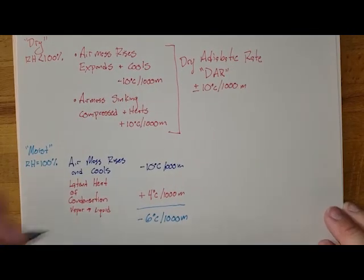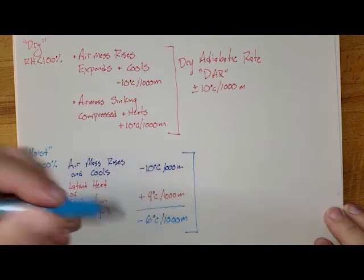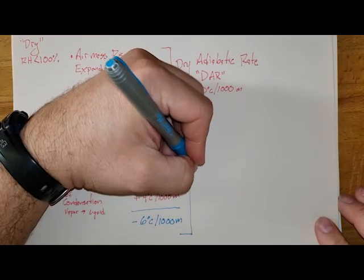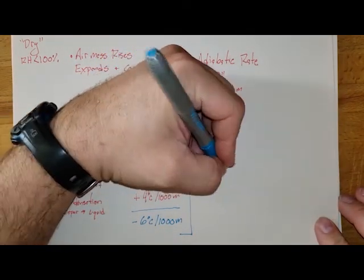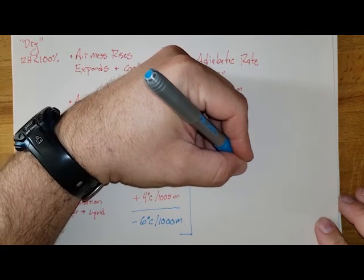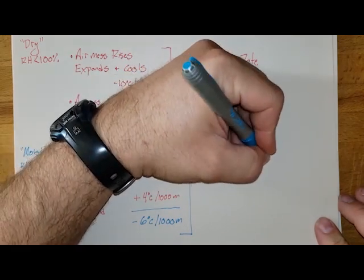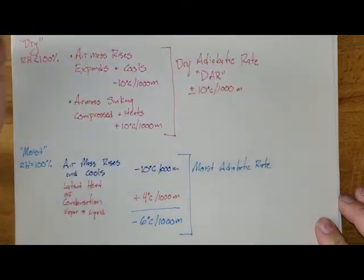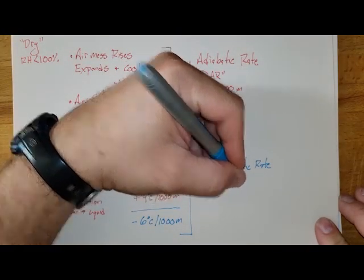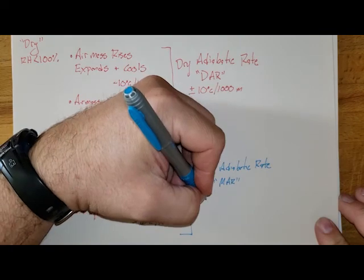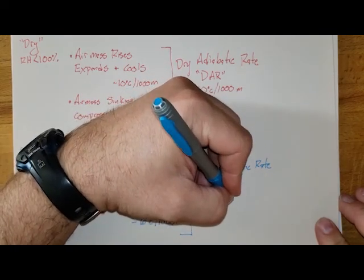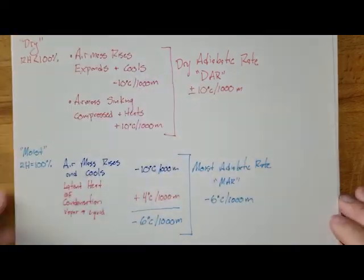Because of all of this, we use a different adiabatic rate. We refer to this as the moist adiabatic rate, or the MAR. The MAR is negative 6 degrees Celsius for every 1,000 meters.